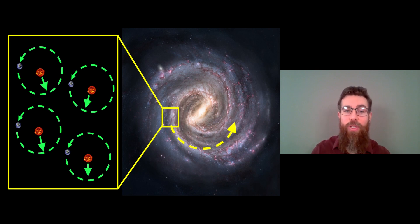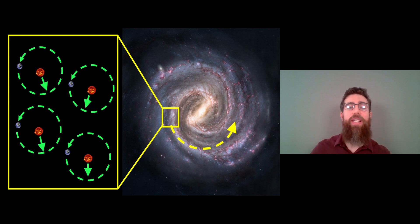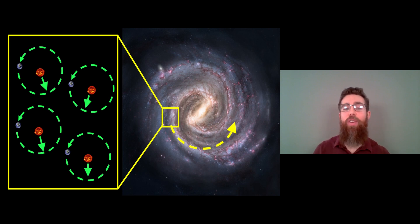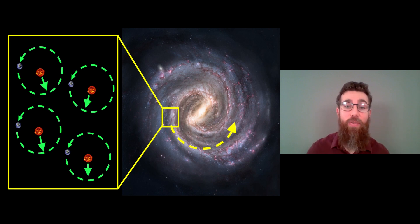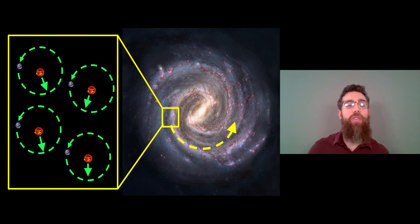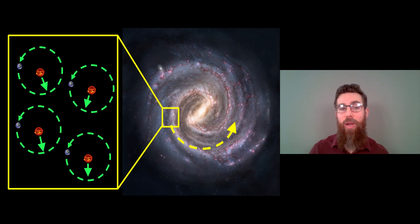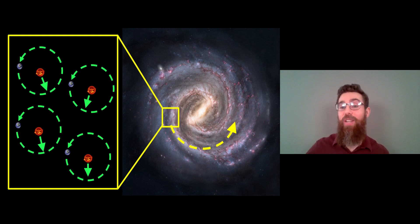Stars can get close to each other, and if they do get too close they can gravitationally perturb each other — they can actually cause ejections of planets just from these encounters. We call that a stellar flyby, when two stars pass each other fairly closely. The gravitational forces can alter the orbits of planets, and in extreme cases eject some of them, producing even more rogue planets.